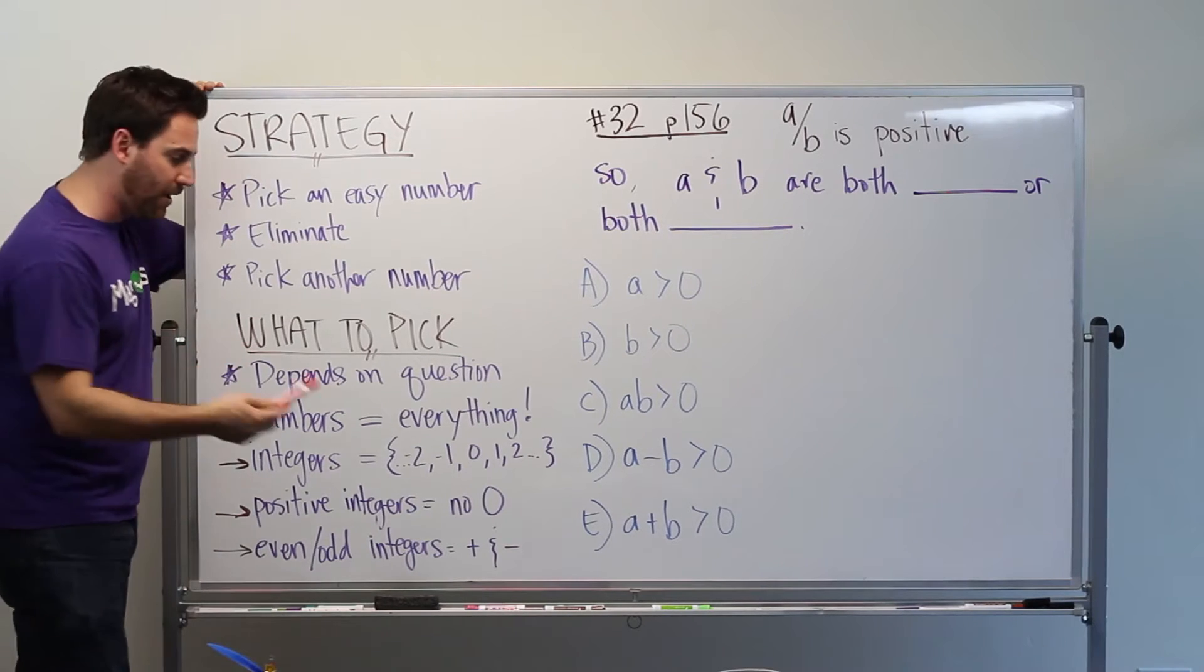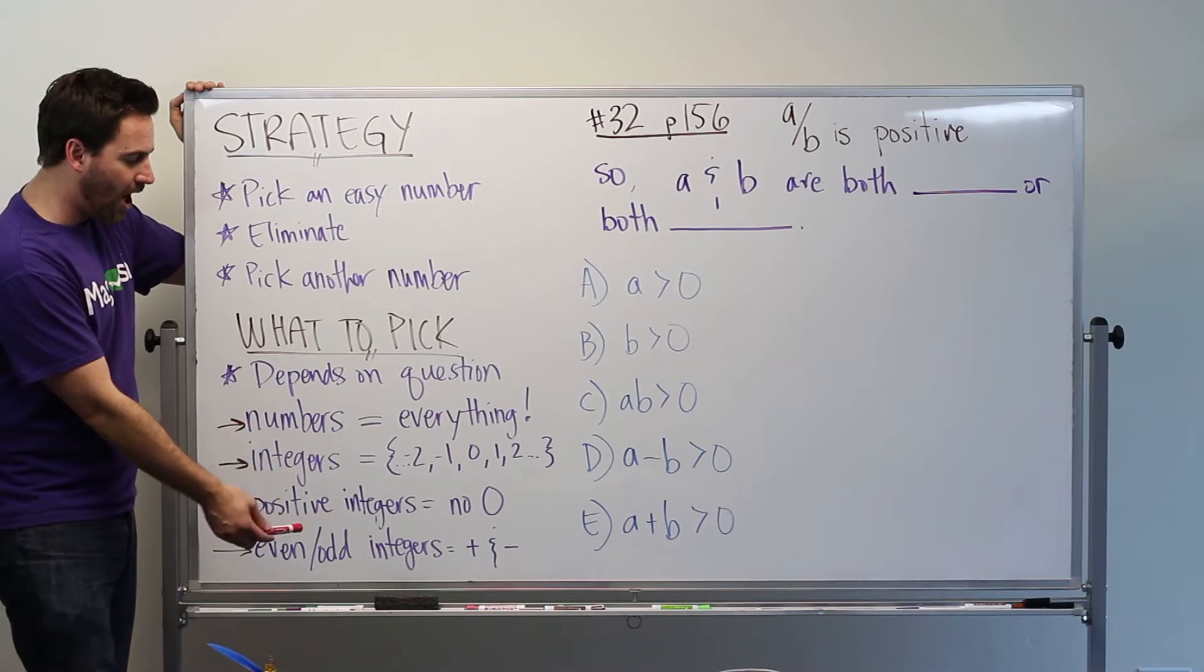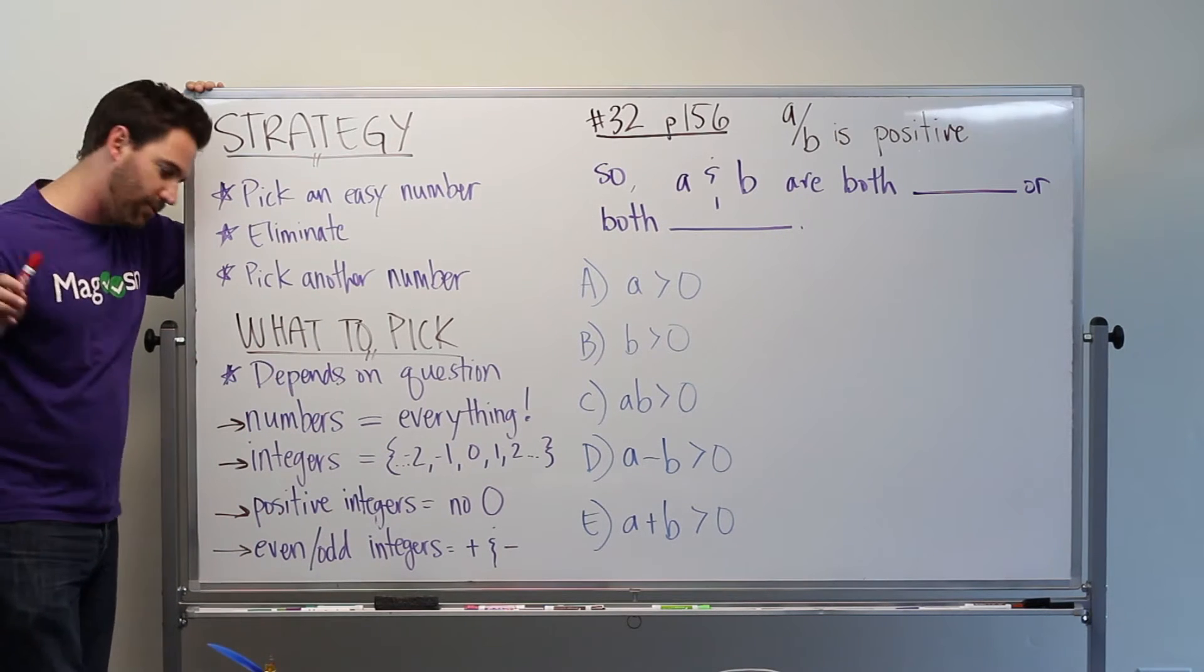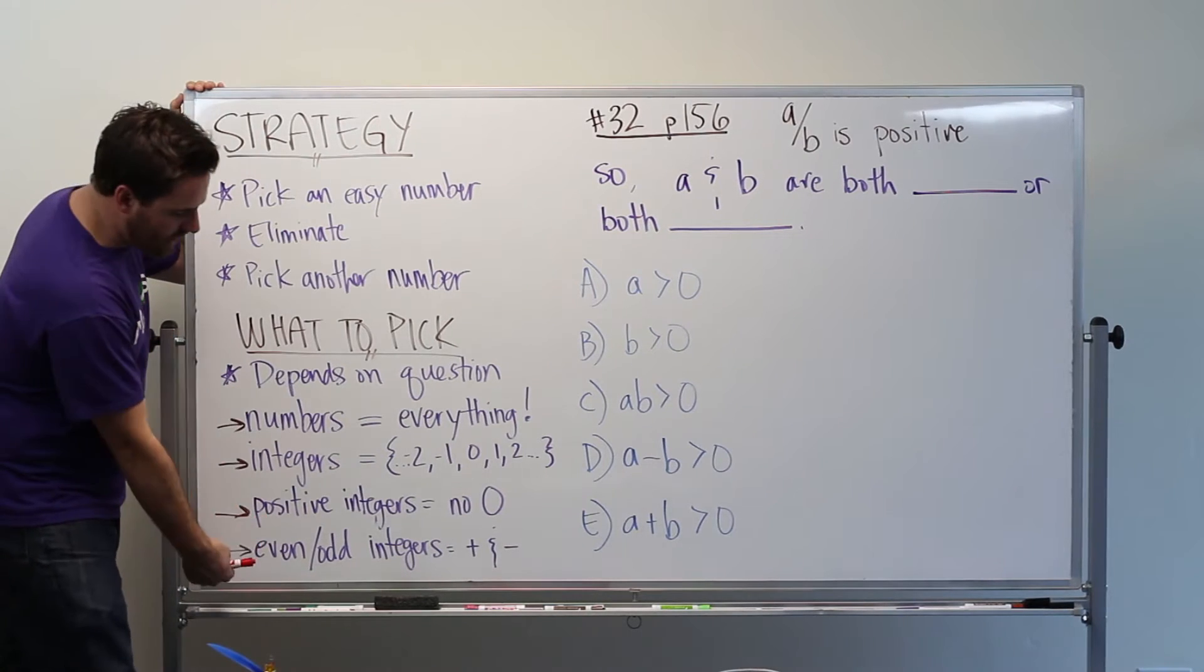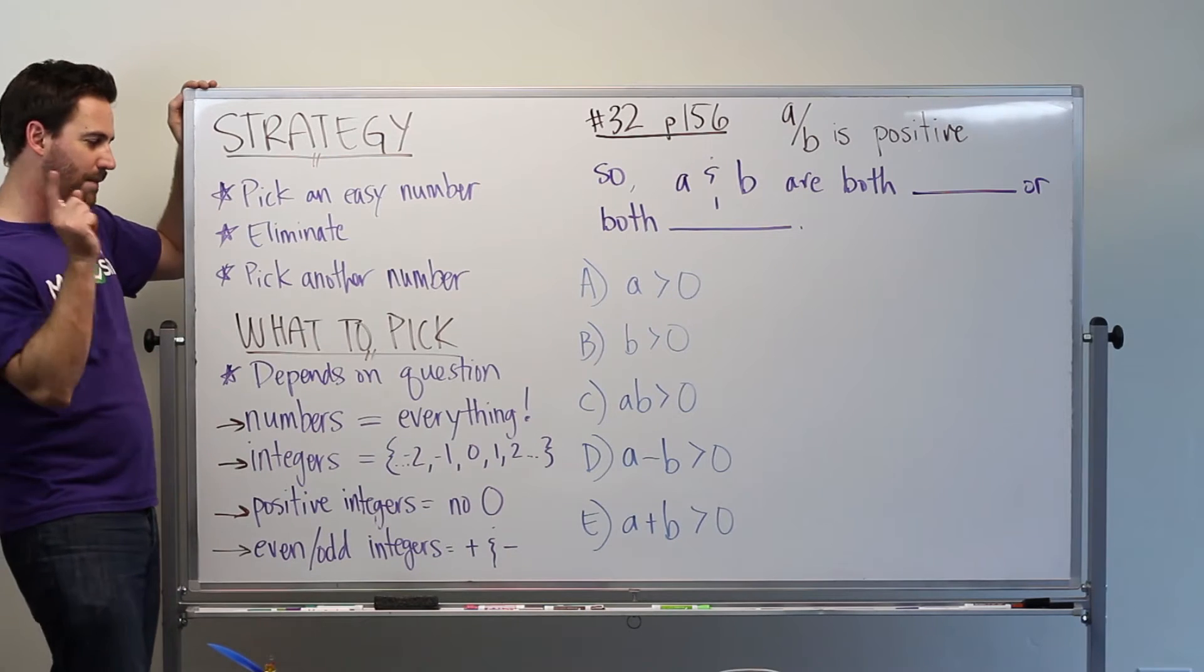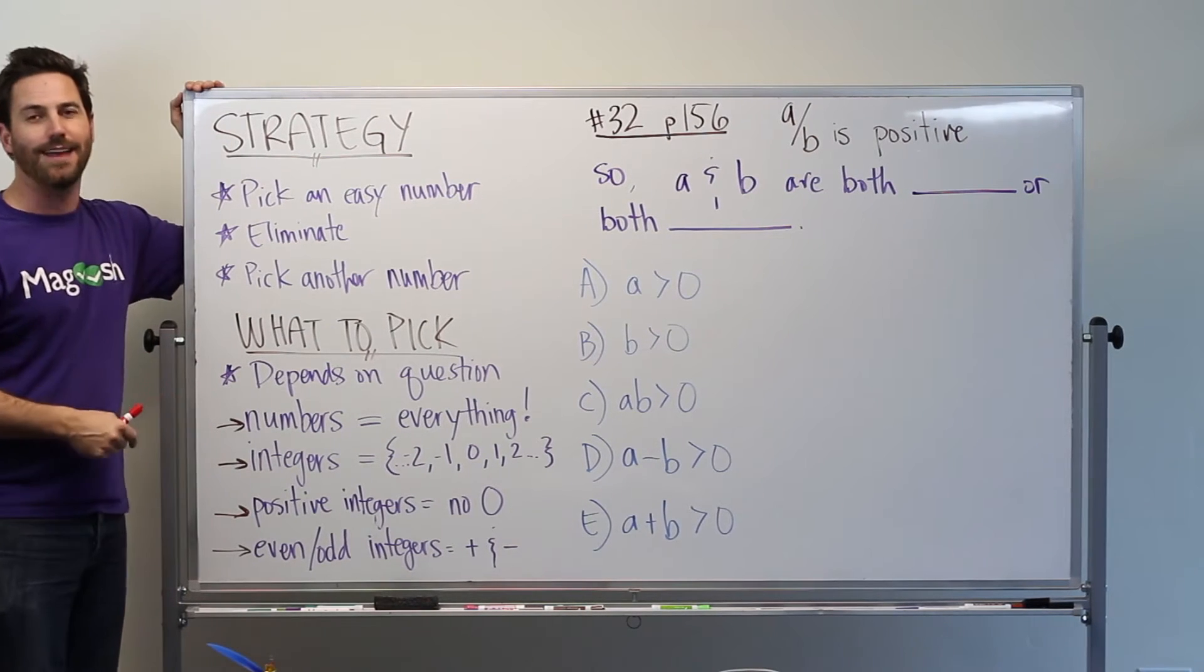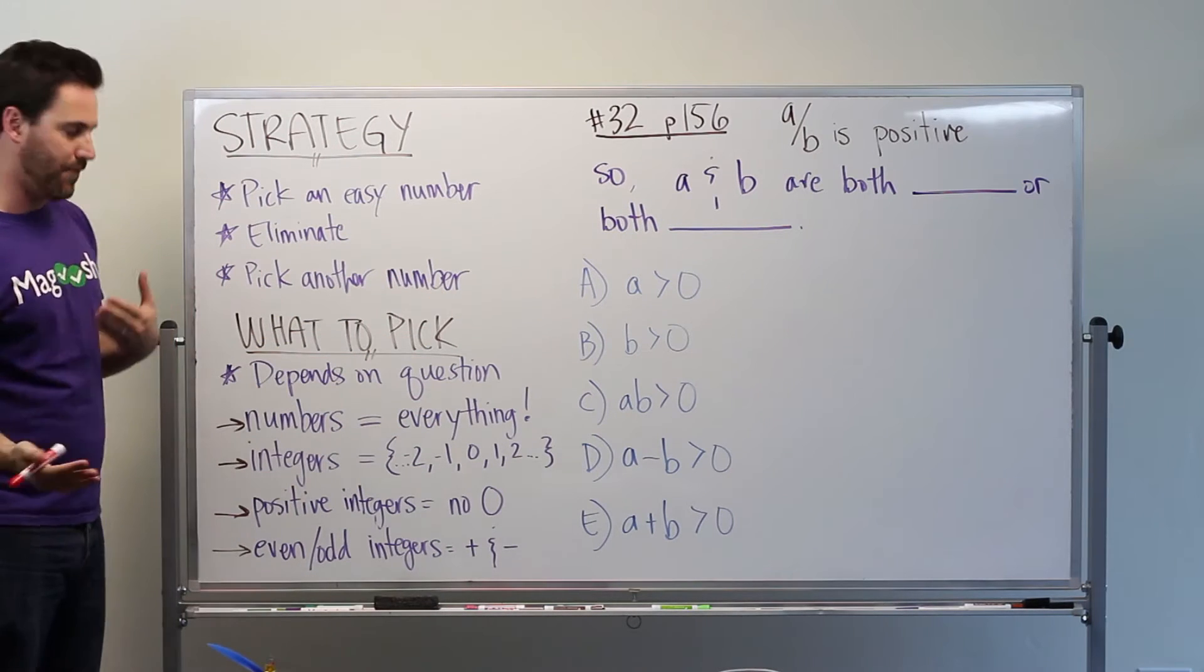Negative integers will be below zero, negative one, negative two. And then finally, even and odd integers. This is a reminder that does include positive and negative. So if you had even integers, negative two and two would be counted. Also remember, zero would be counted as an even integer as well. Odd integers, negative three and three.